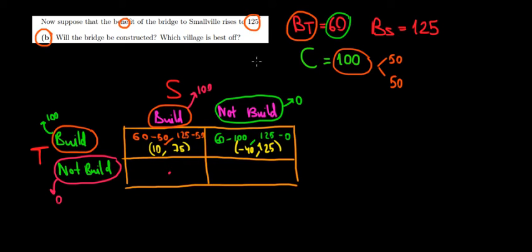Let's see what would be the net results. For Tiny Town, the benefit would be still 60 minus a zero cost. And for Smallville, the benefit would be 125 and the cost of 100, so it would be 125 minus 100. The net payoff over here: 60 minus zero would be 60, and 125 minus 100 would be 25.